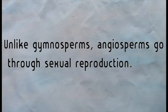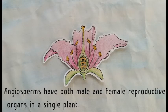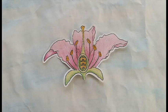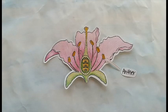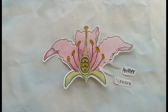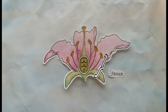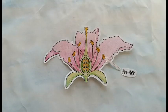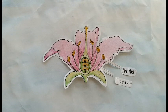Unlike gymnosperms, angiosperms go through sexual reproduction. Angiosperms have both male and female reproductive organs in a single plant. The male reproductive organ is called the stamen, which includes the anther and filament. The stamen produces microspores that develop into pollen grains containing male gametophytes. Pollen is produced on the anther, which is supported on the filament — a stalk.